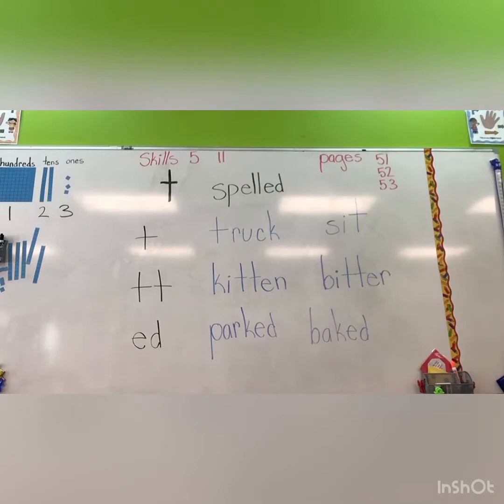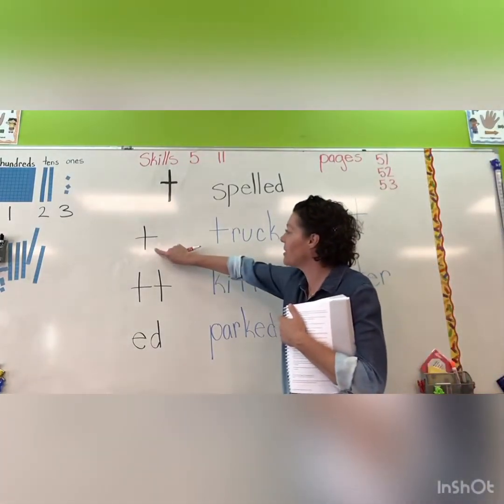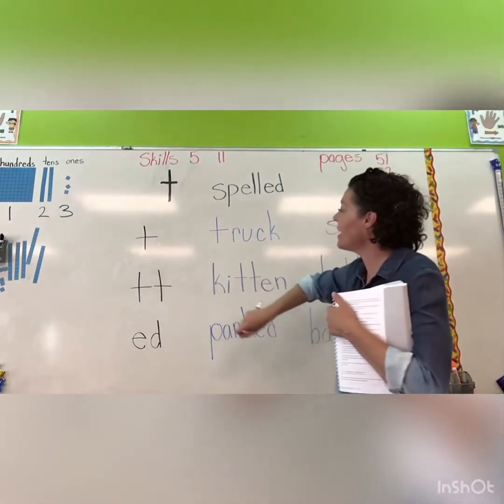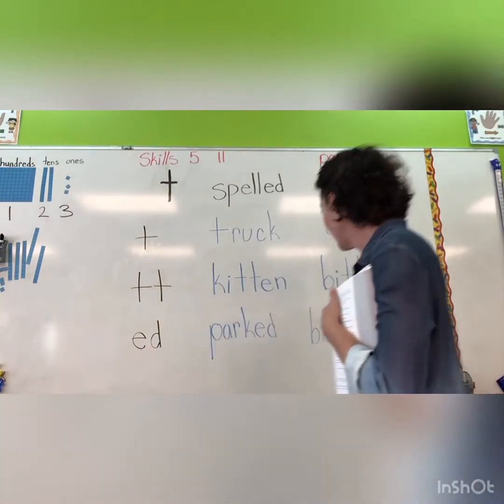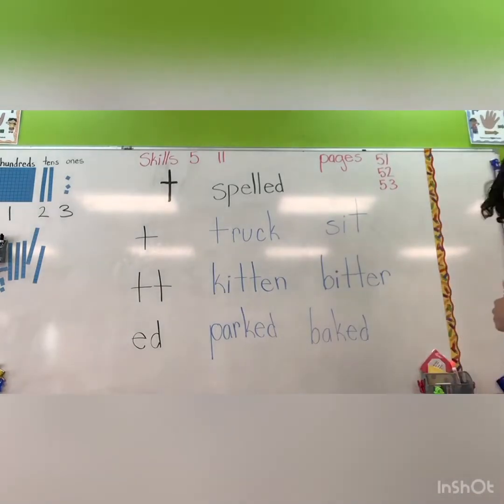All right, today we're looking at the different spellings for the sound of T. We've looked at them before. We know we can have T that says T, T-T that says T, and E-D that says T. Here we go. Let's look at those.